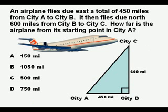Let's look at a problem. An airplane flies due east a total of 450 miles from city A to city B. It then flies due north 600 miles from city B to city C. How far is the airplane from its starting point in city A?